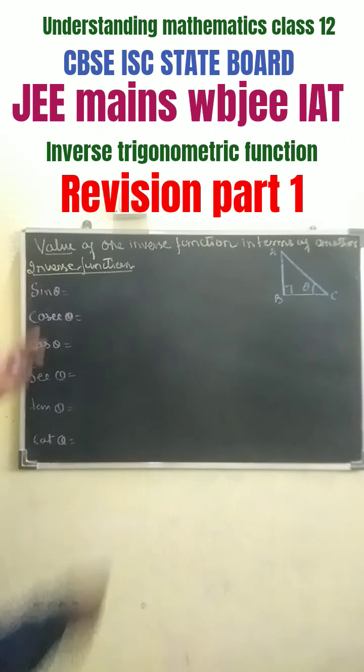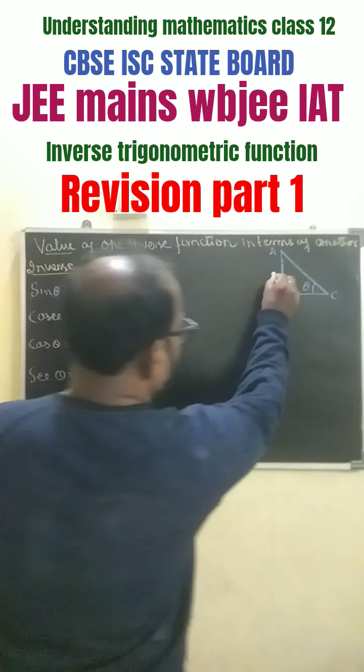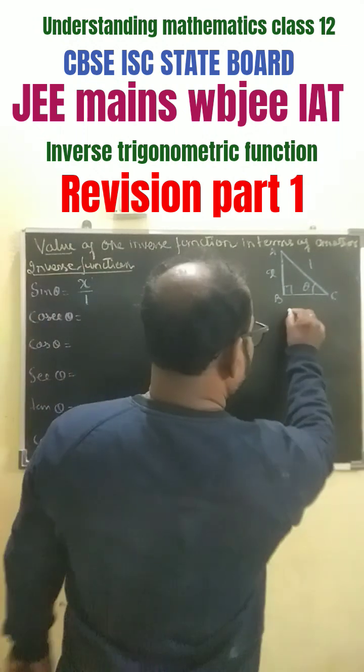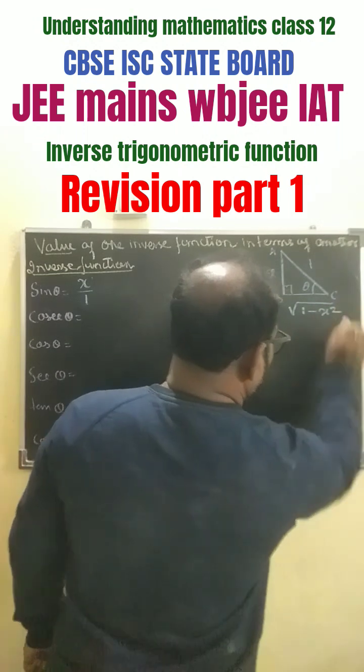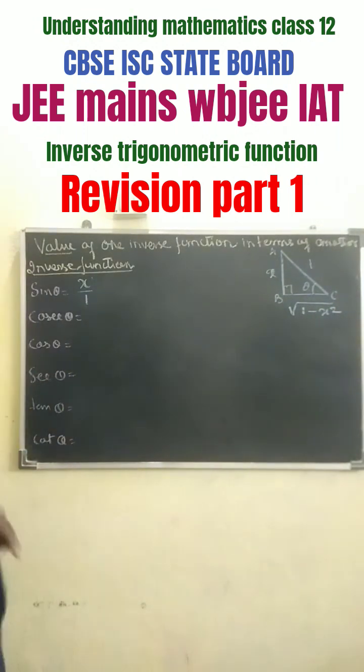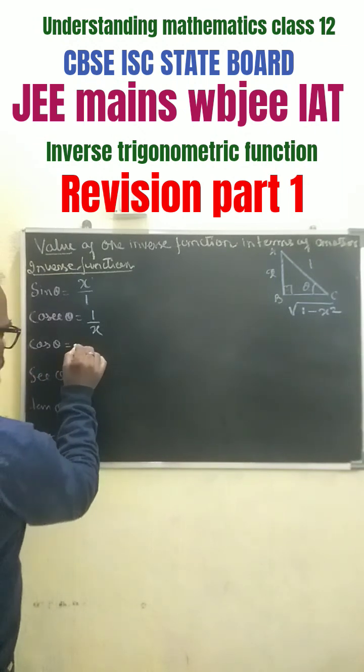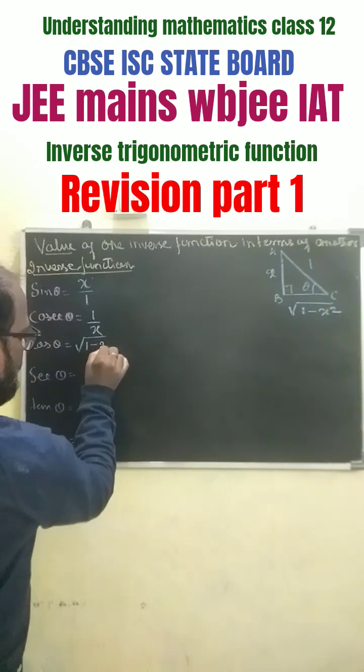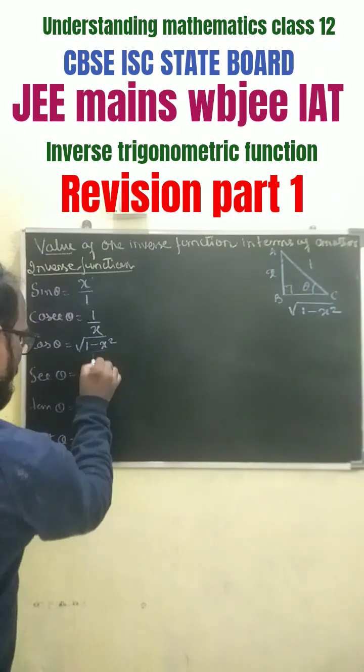Let us suppose that sin theta equals x by 1. So let us write here x, 1. With the help of Pythagoras theorem, it becomes 1 minus x squared. Then cos theta becomes root over 1 minus x squared by 1.